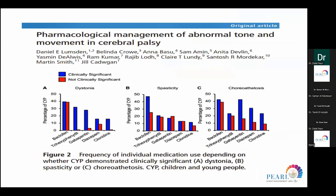A UK study compared all these management options for treating dystonia, spasticity, and choreoathetosis, and found that baclofen is clinically significant in patients with spasticity. However, trihexyphenidyl and gabapentin are more effective in dystonia.